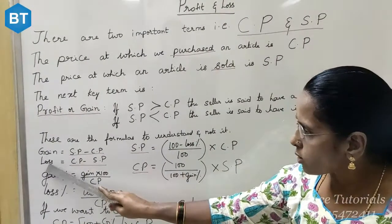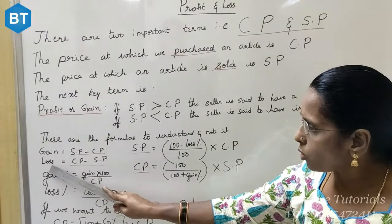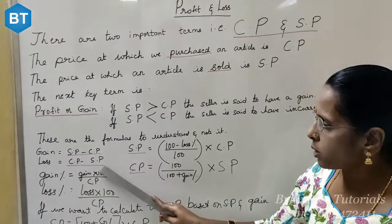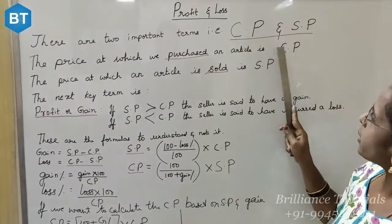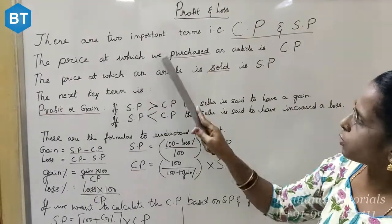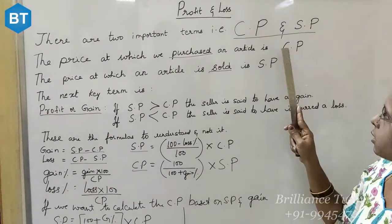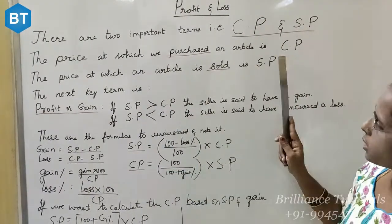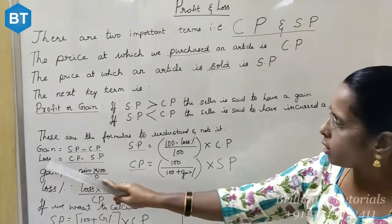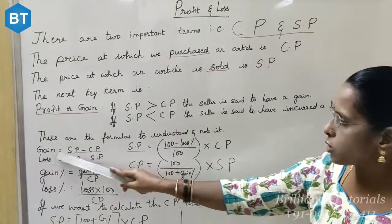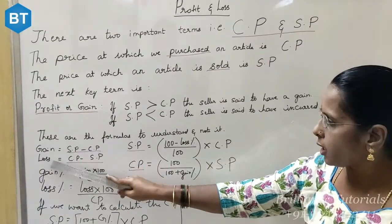On the other hand, loss is equal to CP minus SP. What do you mean by CP? The price at which we purchase an article is CP. So CP minus SP will give you the loss. Have you understood about gain and loss?